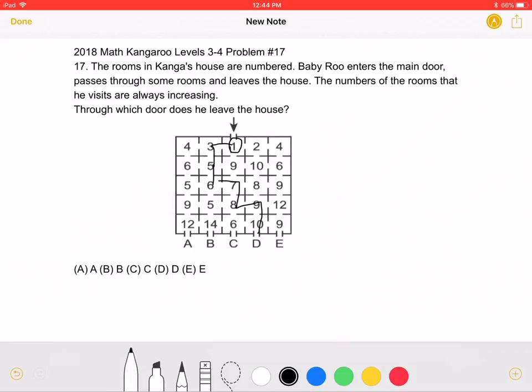That means that the correct answer is answer choice D. Now, we know that this is the only correct way, because otherwise, he would have gone into a room with a higher number followed by a room with a lower number afterward. And we can't do that. So we know answer choice D is the only correct answer.